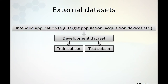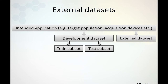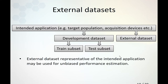We need to extract a new dataset which is not related to the development dataset, but is still from the intended clinical application of the system — the same target setting, but not a subset of the development dataset and not influenced by it. Ideally, the external dataset should be representative of whatever application you plan for your system, in which case it would provide an unbiased performance estimation of the entire intended application.